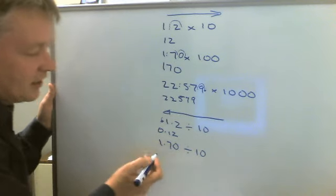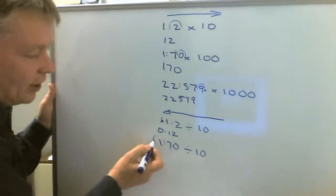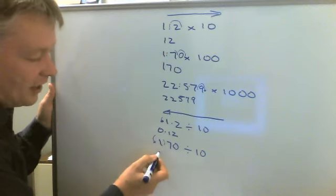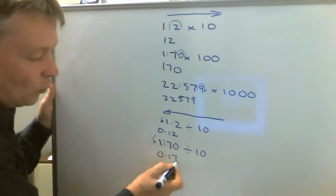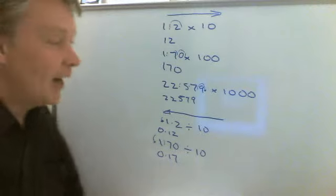And then 1.70 divided by 10. So again, we move over towards the left there. So that would become 0.17.